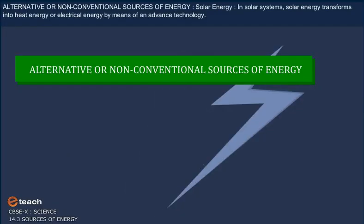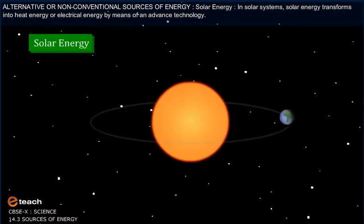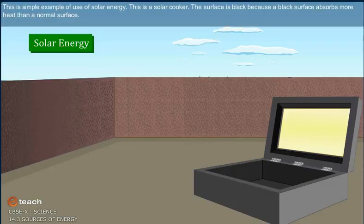Alternative or non-conventional sources of energy. Solar energy: In solar systems, solar energy transforms into heat energy or electrical energy by means of advanced technology. This is a simple example of use of solar energy.